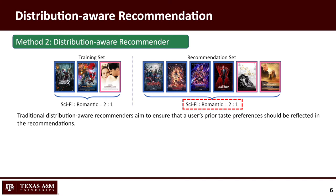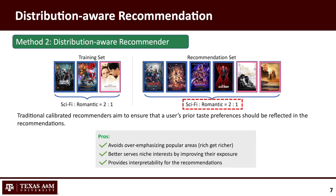The other direction to address the rabbit hole effect is called distribution-aware recommendations, which aims to ensure that users' prior taste preferences should be reflected in the recommendations. For example, a user who historically prefers sci-fi to romantic movies by 2-to-1 should see a similar ratio in the recommended movies. This approach could effectively avoid overemphasizing popular areas, mitigating the rabbit hole effect, and better serves niche interests by improving their exposure. Comparing with diversification-focused recommendations, it can also provide interpretability — letting us know why the system recommends such lists.